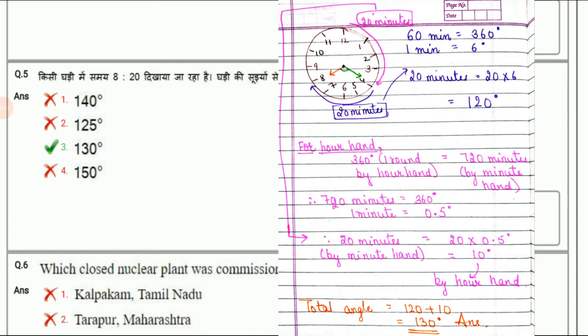That means the minute hand has started from 12 and reached to 4. For this particular rotation the minute hand has taken 20 minutes. From 12 to 4 it has taken 20 minutes. And per minute has 0.5 degree angle by the hour hand. So if the minute hand has covered these 20 minutes, the hour hand will cover 20×0.5=10 degrees. There will be 10 degrees extra taken by the hour hand. We already had 120 degrees and 10 degrees extra by the hour hand, so the total answer is 130 degrees. This is how this question is done.